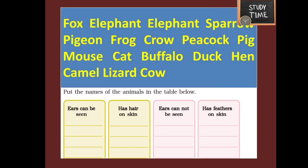In the next picture there is a list of animals — fox, elephant, sparrow, pigeon, frog, crow, peacock, pig, mouse, cat, buffalo, duck, hen, camel, lizard, and cow.